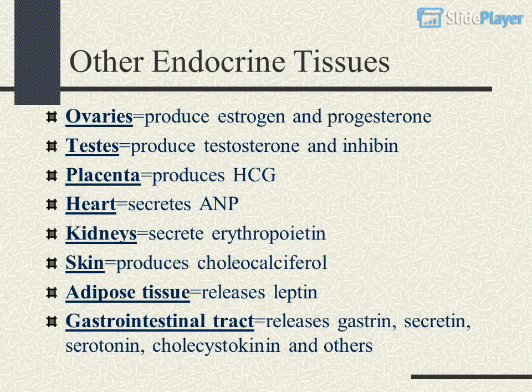Other endocrine tissues: ovaries produce estrogen and progesterone; testes produce testosterone and inhibin; placenta produces HCG; heart secretes ANP; kidneys secrete erythropoietin; skin produces cholecalciferol; adipose tissue releases leptin; gastrointestinal tract releases gastrin, secretin, serotonin, cholecystokinin, and others.